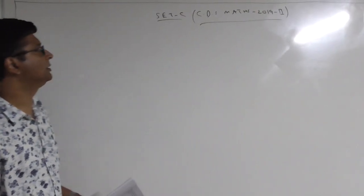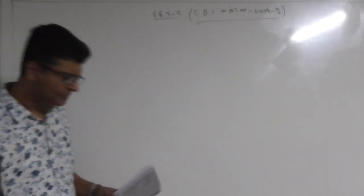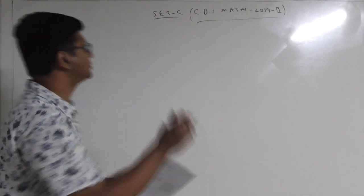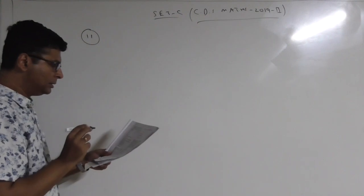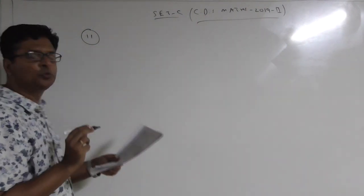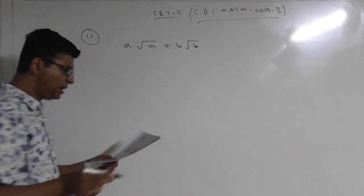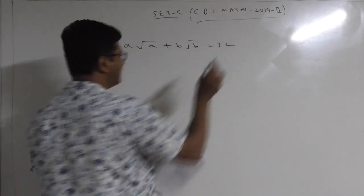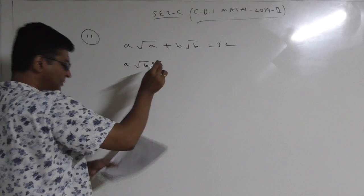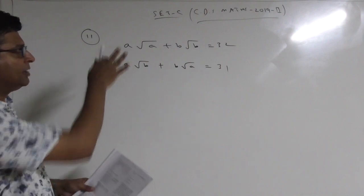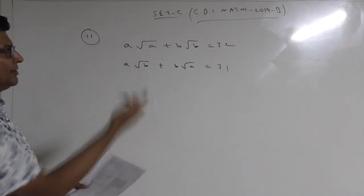Let's start discussing Set C of CDS Maths 2019 second paper. I will be taking selected questions, and the first question I am taking is question number 11. In this question, A and B are two positive real numbers and two equations are given: the first equation is A√A + B√B = 32, and the second equation is A√B + B√A = 31. Students find it uncomfortable to solve because they might not be getting the first step.